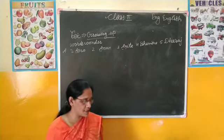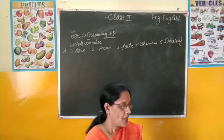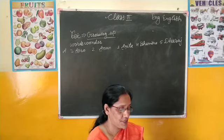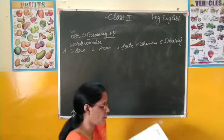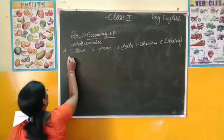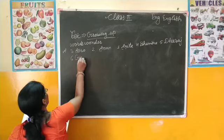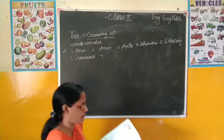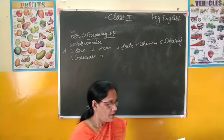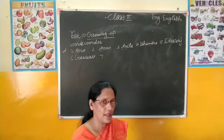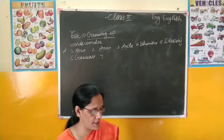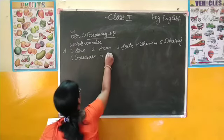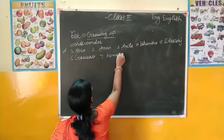इसके बाद Six Number पे हम चलते हैं। D से और कोई name नहीं है। E से भी नहीं है, F से भी कोई name नहीं है। उसके बाद Gaurav है - Gaurav होगा Six Number। फिर आता है Seven Number - G पे Himani है, H-I-M-A-N-I।